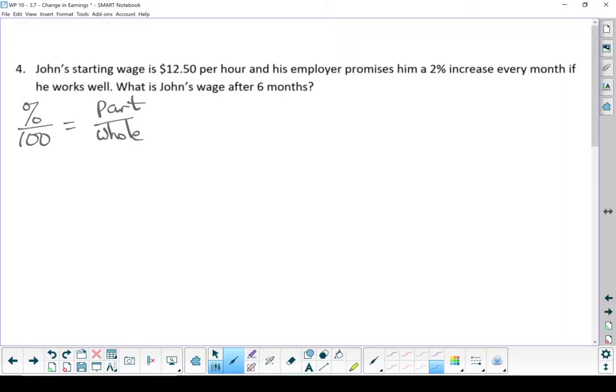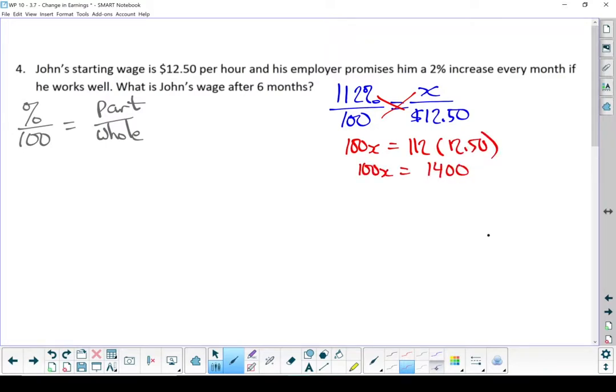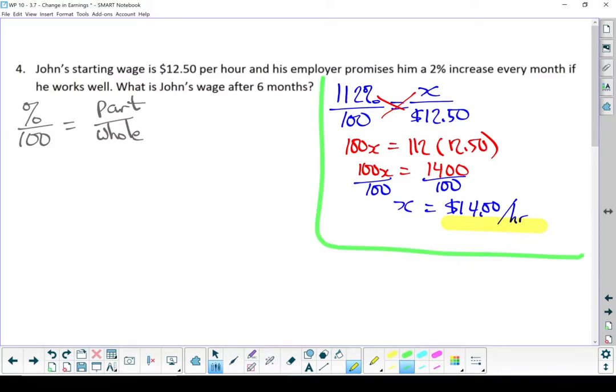I'm not going to do just the 12% raise. I'm actually going to do the 112%. Let's cross multiply that. Divide both sides by 100. Using that method, John works his way up to $14 an hour after six months. He got a raise of $1.50. Well, I'm going to put a box around this and I'm going to put a little note. Not quite right. And let me show you the correct way.